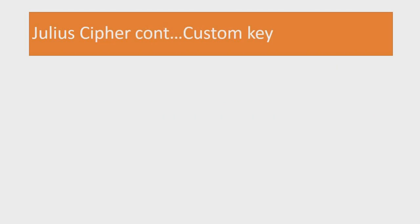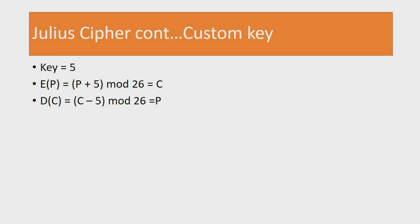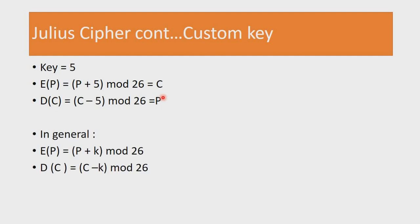It is not always that we use a key of 3 — sometimes we can have a custom key. For example, when your key is 5, to encrypt you add 5 to your plain text element and express the result in mod 26. To decrypt, you take the cipher text minus 5 and express it in mod 26. This leads us to a general formula: the encryption of an element p equals p plus k, mod 26, and decryption is c minus k, mod 26 — where p is the plain text, c is the cipher text, and k is the key. If your key is 7, you shift 7 elements to the right to encrypt and 7 elements to the left to decrypt.